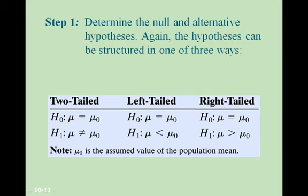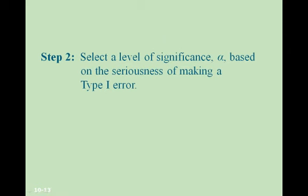Step one is to determine the null and alternative hypotheses. They can be structured in one of three ways: the two-tailed test uses a not-equal-to symbol for H sub 1; the left-tailed test uses a less-than symbol for H sub 1; and the right-tailed test uses a greater-than symbol for H sub 1. Step two is to select a level of significance alpha based on the seriousness of making a type 1 error, and typically this value will be given to you.